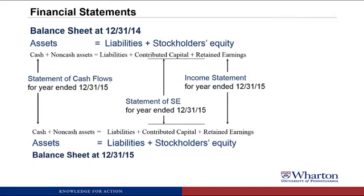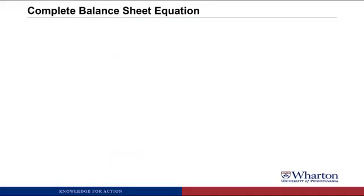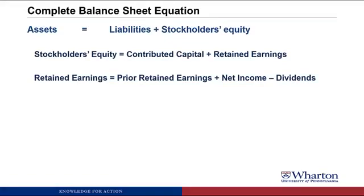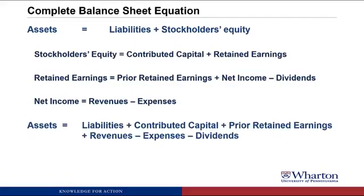We also have the statement of stockholders' equity, which explains changes in stockholders' equity between two balance sheets. Stockholders' equity has two components: contributed capital (money raised from shareholders) and retained earnings (created by operating the business). Retained earnings equals prior retained earnings plus net income minus dividends — that's why it's called retained earnings. Net income is revenues minus expenses. Putting this all together into the complete balance sheet equation: assets equal liabilities, plus contributed capital, plus prior retained earnings, plus revenues, minus expenses, minus dividends paid during the period.